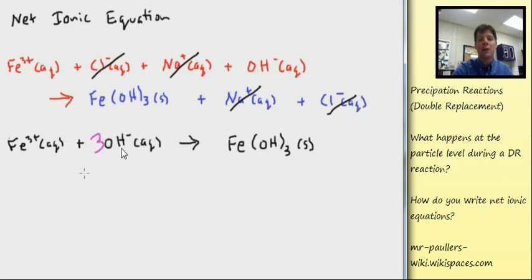So the iron ion plus hydroxide ion forming the iron three hydroxide precipitate. I'll balance charges and number of particles by adding the coefficient three right here.